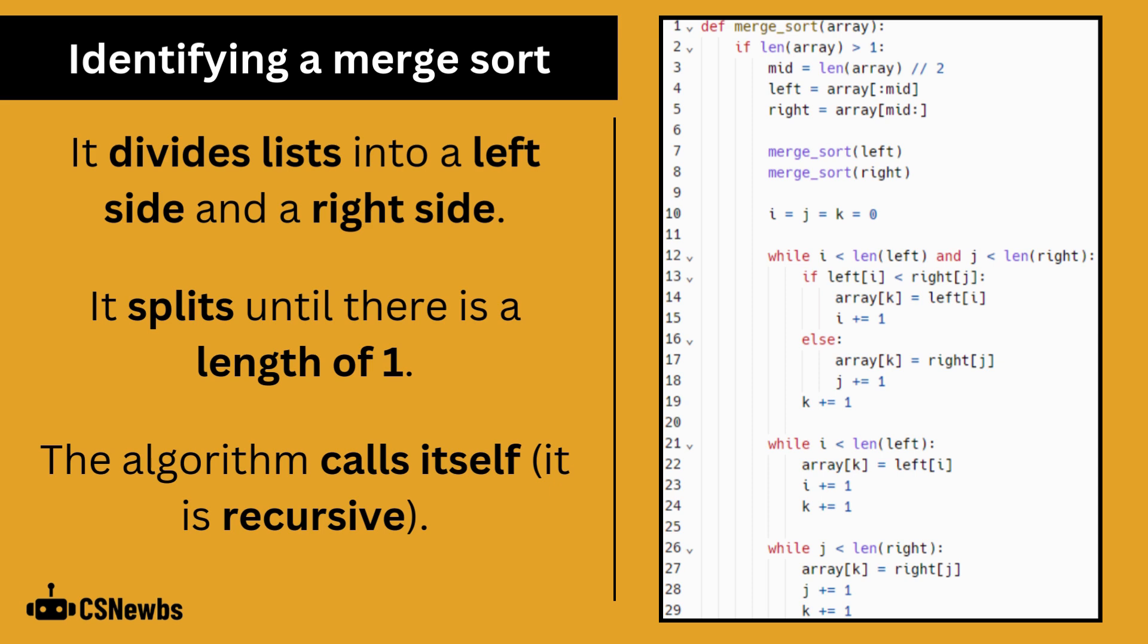Recursion is a concept in A-level that you don't need to know for GCSE, but you might be able to see on lines seven and eight that the merge sort is calling itself to repeatedly split lists in half.